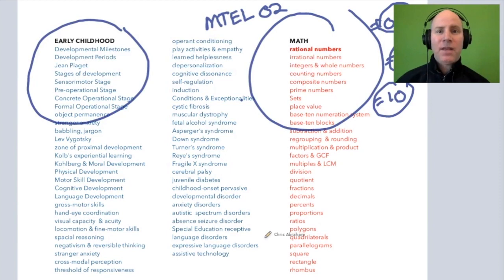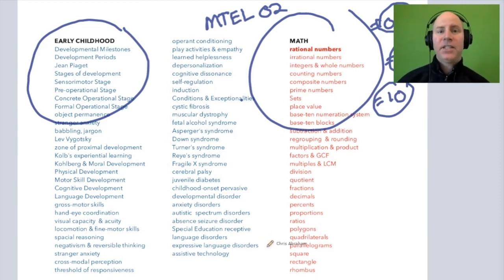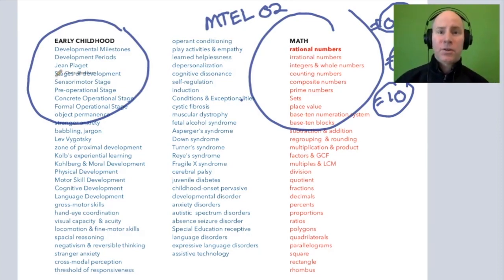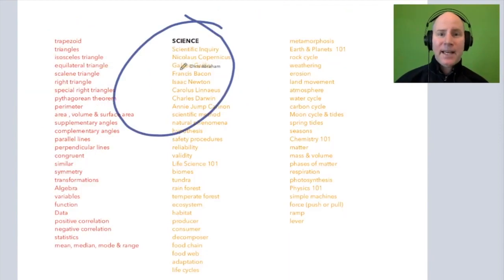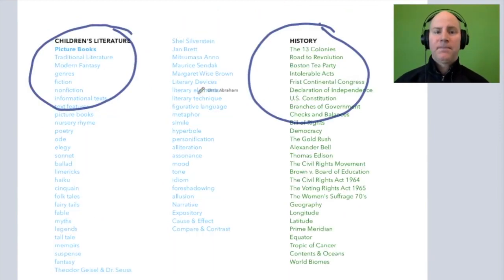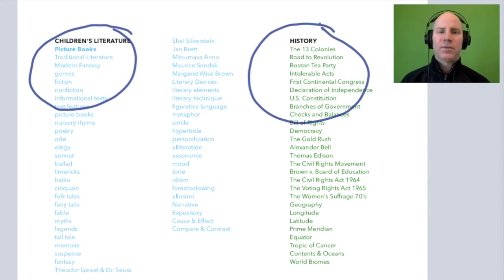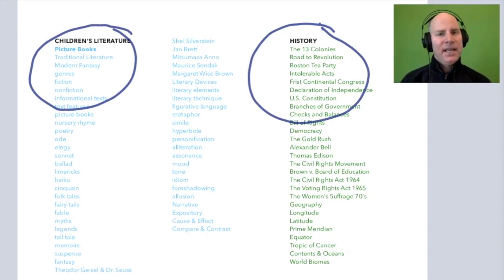One of the best ways you can get ready for this test is to study the core content or core vocabulary in each of these sections — all the key vocabulary words and concepts in early childhood, math, science, English and literacy, and history. These are the essential ideas you want to know for success on the multiple choice and the open response. You're just building general knowledge here; no one has to be an expert. It's just having an awareness of these ideas.